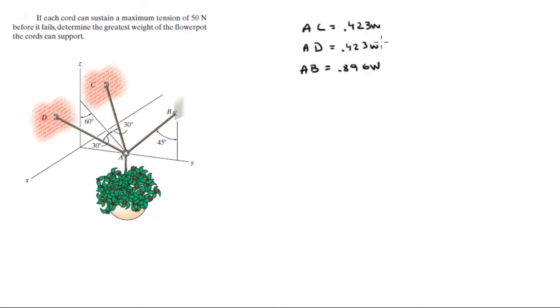Now you know that just by looking at this, AB is bigger than the other two. If AB is bigger than the other two, that means that this cord is holding the greatest part of the weight of the pot. Therefore, AB is equal to 50, because it's going to be the one sustaining the most weight. If AB is equal to 50, and you know that AB is equal to 0.896 W, then 50 is equal to 0.896 W. Which means that W is equal to 55.8 Newtons.